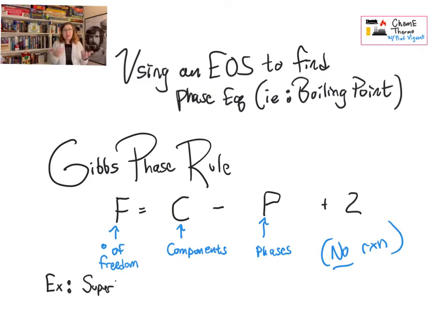So when you think about this, imagine superheated steam, for example. Well, that's got one component, which is water. It's got one phase, which is superheated steam. So 1 minus 1 plus 2 is 2. So the superheated steam tables, you can pick, for example, a temperature and a pressure, and superheated steam exists under those conditions.